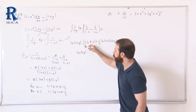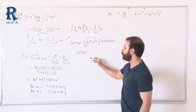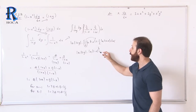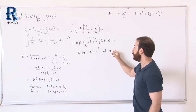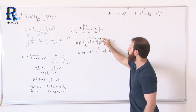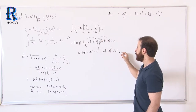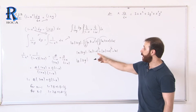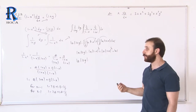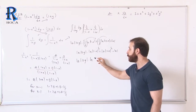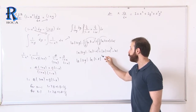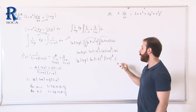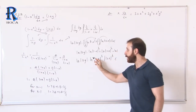Since the coefficients are 1/2, we can move them inside as powers: ln|1 minus x| to the power of 1/2 and ln|1 plus x| to the power of 1/2. When logarithmic functions are added, we can combine them into one logarithm as a product: ln of |1 minus x|^(1/2) times |1 plus x|^(1/2) times c.